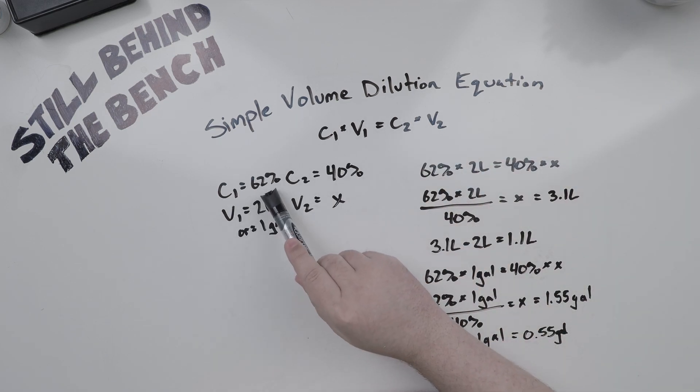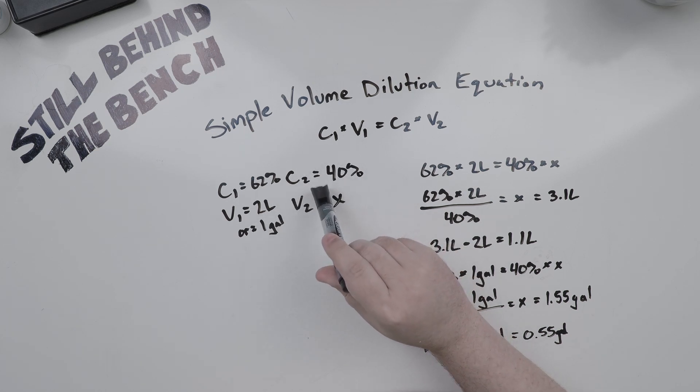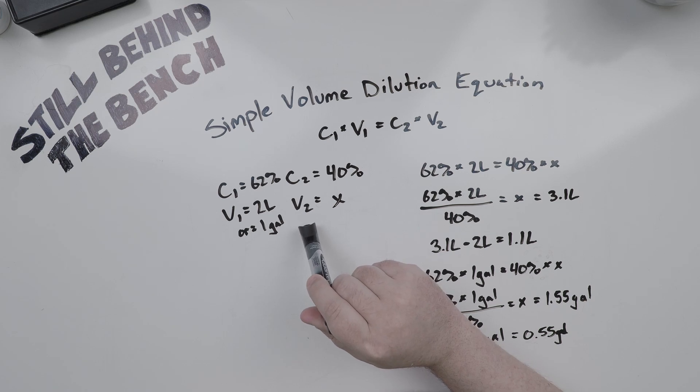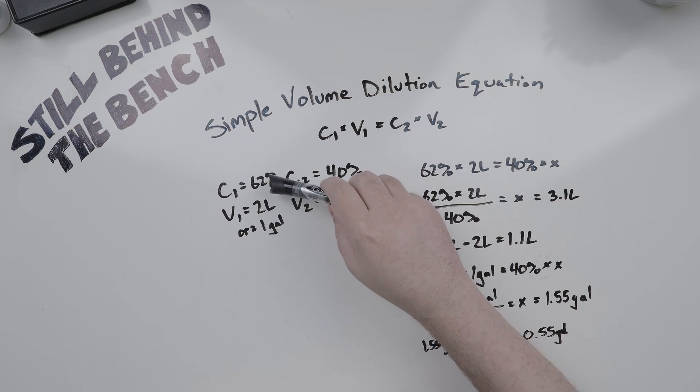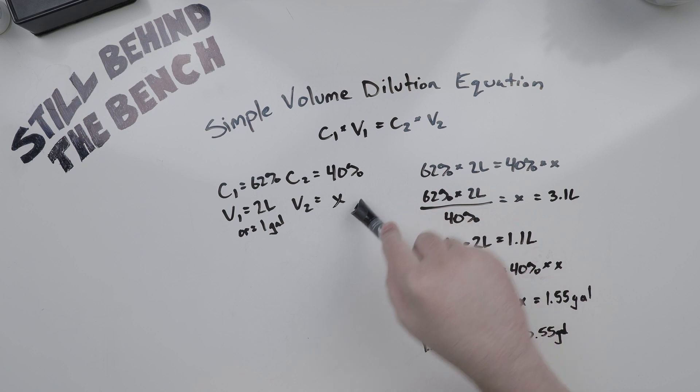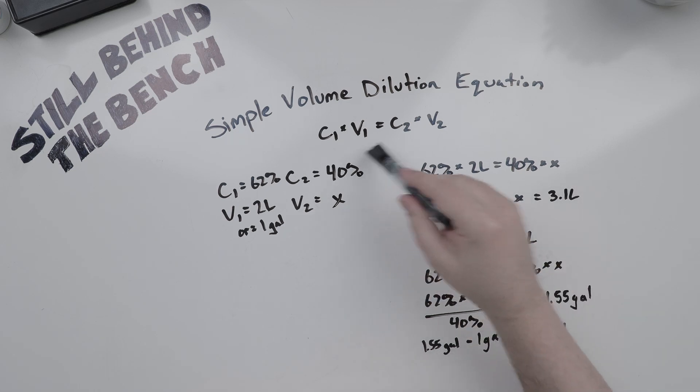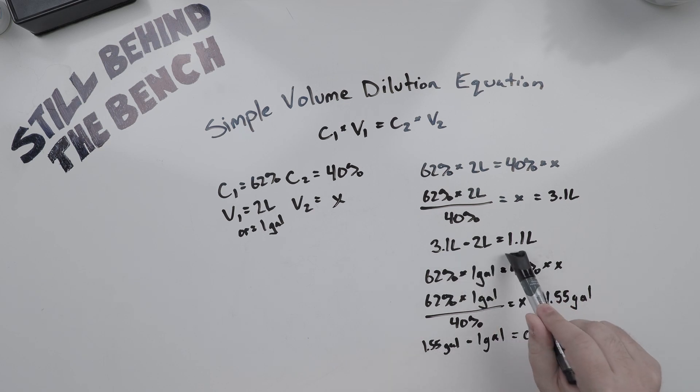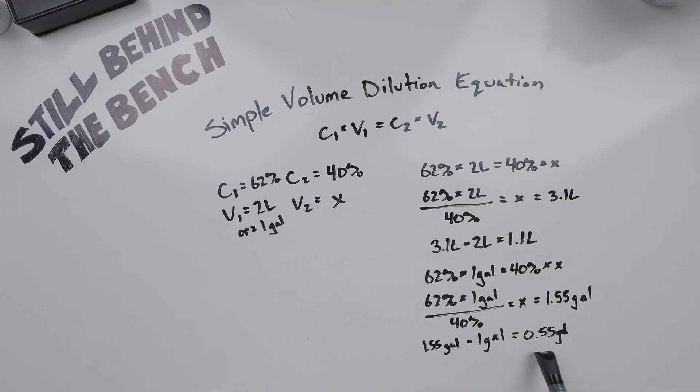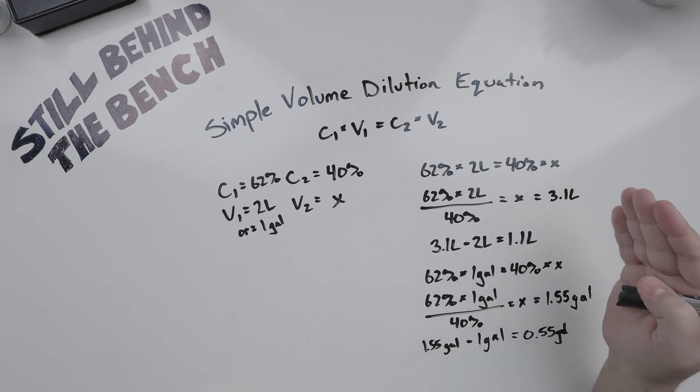So assuming we have a 2 liter spirit at 62% and we want to dilute it down to 40%, what's our final volume going to be? 62% times 2 liters equals 40% times X. Divide both sides by 40%. X equals 3.1 liters. Subtract the original volume and we need to add 1.1 liters of water to get 40%.